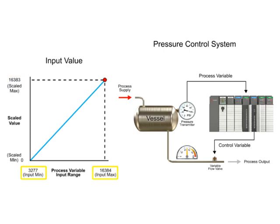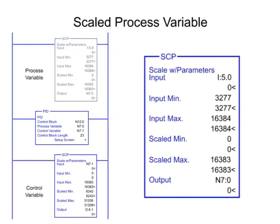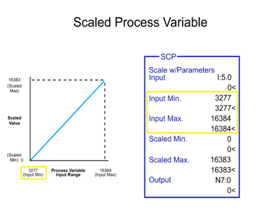The input value is scaled to a range of 0 to 16,383 compatible with the PID instruction using the Scale with Parameters instruction, or SCP. The input parameter of the SCP instruction contains the memory address of the analog input module. The input minimum and input maximum are programmed as the smallest and largest values produced by the analog input module. The input values are then scaled between the ranges programmed in the Scaled minimum and Scaled maximum parameters. Scaled minimum value is programmed as 0, representing the low end of the output range. Scaled maximum value is programmed as 16,383, representing the high end of the output range.